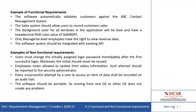A second example: employees are never allowed to update their own salary information — that is a task for the administrator, HR department, or project manager. Every unsuccessful attempt by a user to access an item of data shall be recorded in an audit log, so you should keep track of all actions happening in the system — that is a non-functional requirement. The software should be portable, meaning moving from one OS to another does not create any problem — that is also a non-functional requirement.